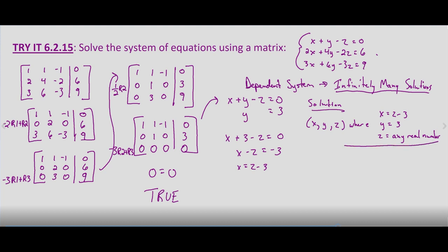Let's go ahead and check this. We can choose any arbitrary real number for z — let's use two. So z equals two means x equals two minus three, which is negative one, and y equals three. Substituting into our first equation: negative one plus three minus two — does that equal zero?